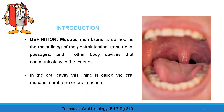Introduction. Oral mucous membrane is defined as a moist lining of the gastrointestinal tract, nasal passages, and other body cavities that communicate with the exterior. In the oral cavity, this lining is called the oral mucous membrane or oral mucosa.